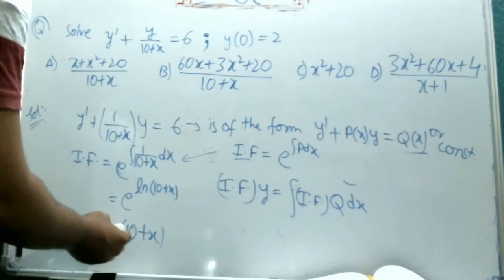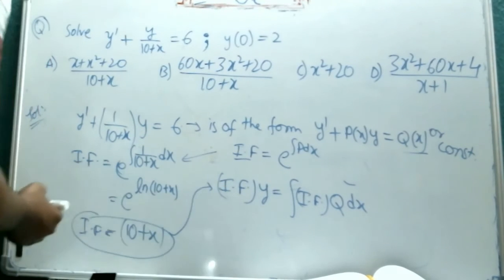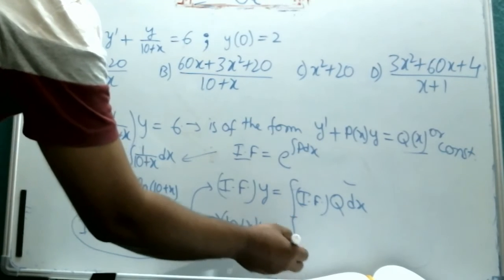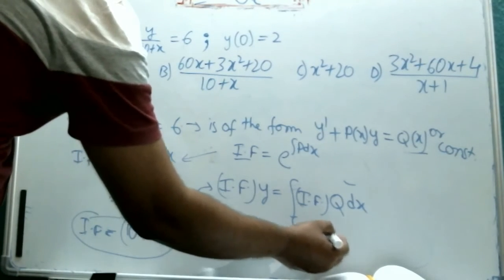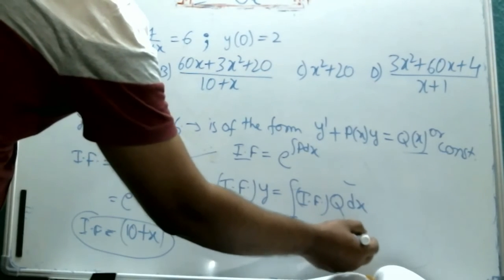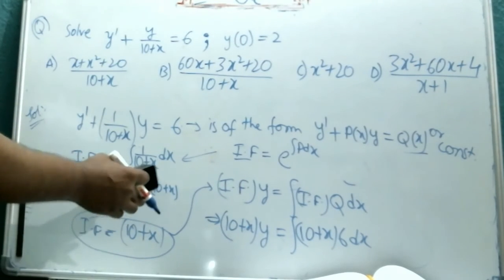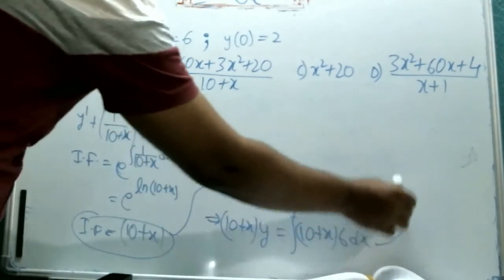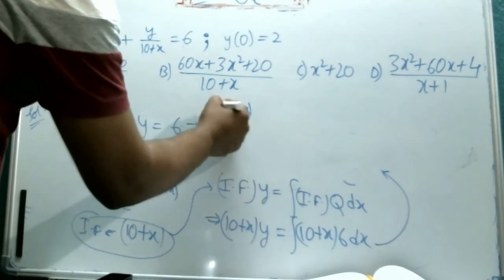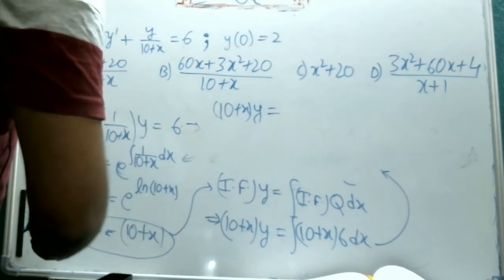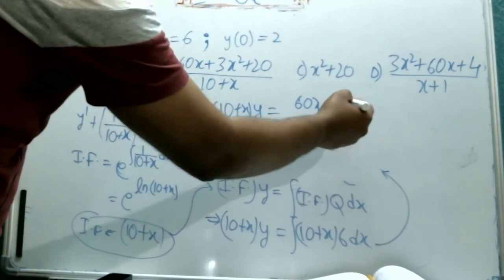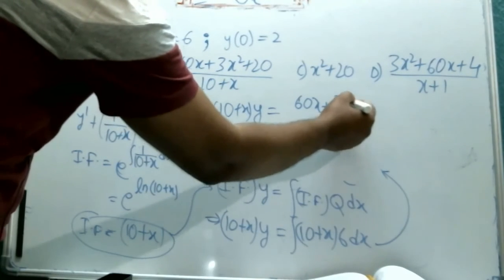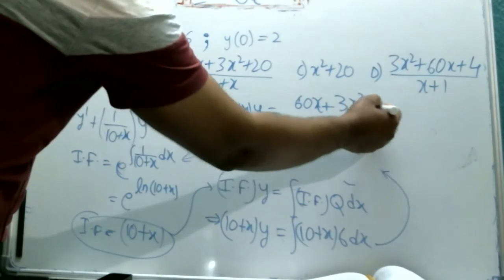This is the integration factor we get. Now, substituting this here, what we get is 10 plus x into y equal to integral of 10 plus x into q is 6 dx. I am rubbing it in this part. For this step, what we get is 10 plus x into y equal to, integrating it, what we will get is 60x plus 3x square. That's what we are going to get plus some constant c.